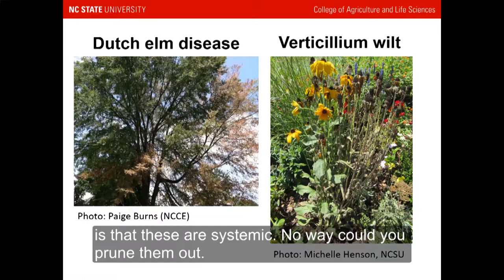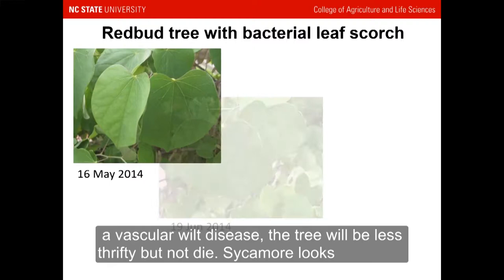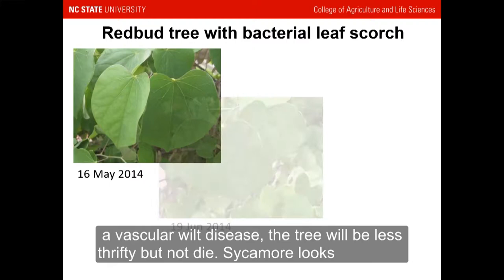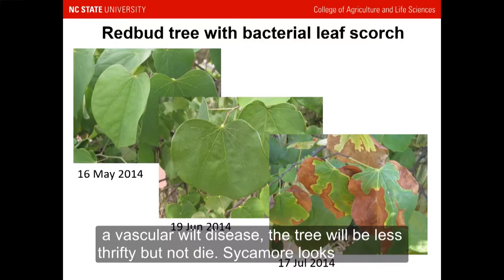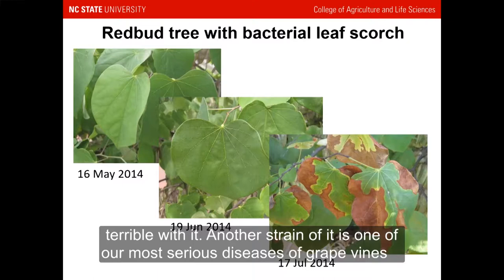Here's a vascular disease that's less serious but very interesting — it's systemic and chronic. This redbud tree has had symptoms going back to at least 2010, but every year it leaves out fine. In May and June it looks great, but when the heat of the season comes in July, you start seeing scorching-like symptoms around the leaf margins. The tree will be infected for the rest of its life and probably won't grow as well as it would otherwise, but it will continue to survive. This same pathogen — bacterial leaf scorch — gets on sycamore and looks terribly ratty. A strain that affects grape causes Pierce's disease, one of the most serious grape diseases in North Carolina.